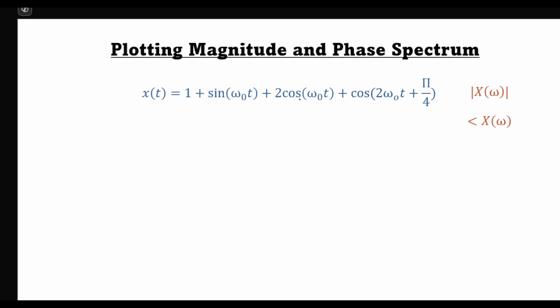For that we will take recourse to the Fourier series representation, which we have looked at in detail in a previous lecture. The Fourier series says that, assuming x(t) has a Fourier series, it can be written as a summation of harmonically related complex exponential signals: a_k · e^(jkω₀t), where k goes from minus infinity to infinity. Here a_k is known as the Fourier coefficient, and k represents the harmonics of the fundamental frequency ω₀.